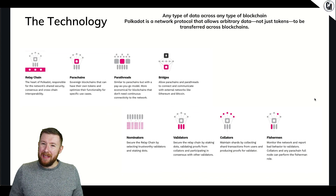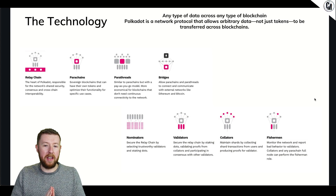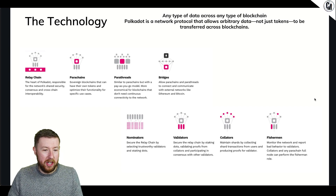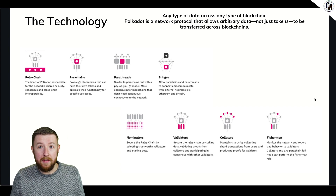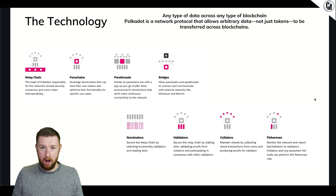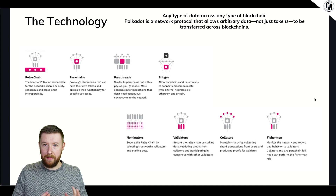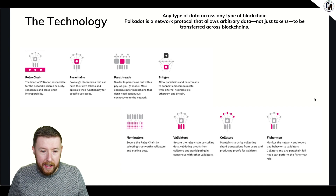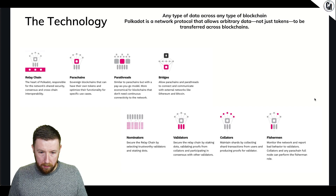Moving on to technology. I don't want to go too deep on this. You've got a relay chain - the heart of it, essentially the layer zero - responsible for network sharding, security, consensus, and cross-chain technology. Then parachains - this is where it gets a little more complicated. These are those individual tokens, those individual projects running on the entire thing: sovereign blockchains that can have their own tokens and optimize for specific use cases - NFT platforms, DeFi platforms, smart contract platforms.